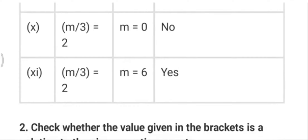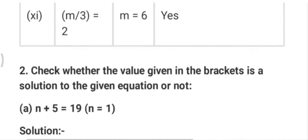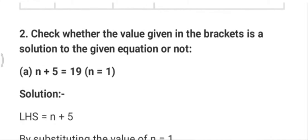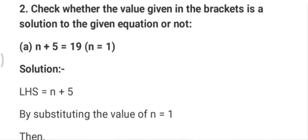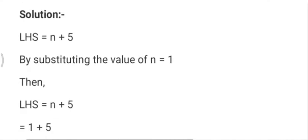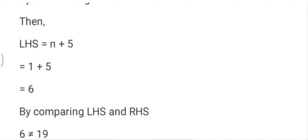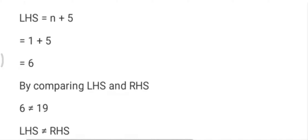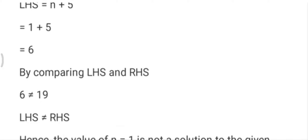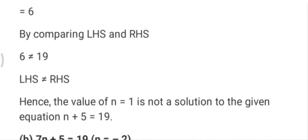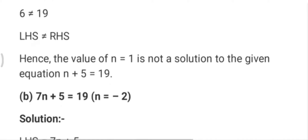Now question number 2: you have to put the values given in the bracket and then write if it is a solution or not. For n+5=19, we put n=1, so 1+5=6 which is not equal to 19. So n=1 is not the solution.